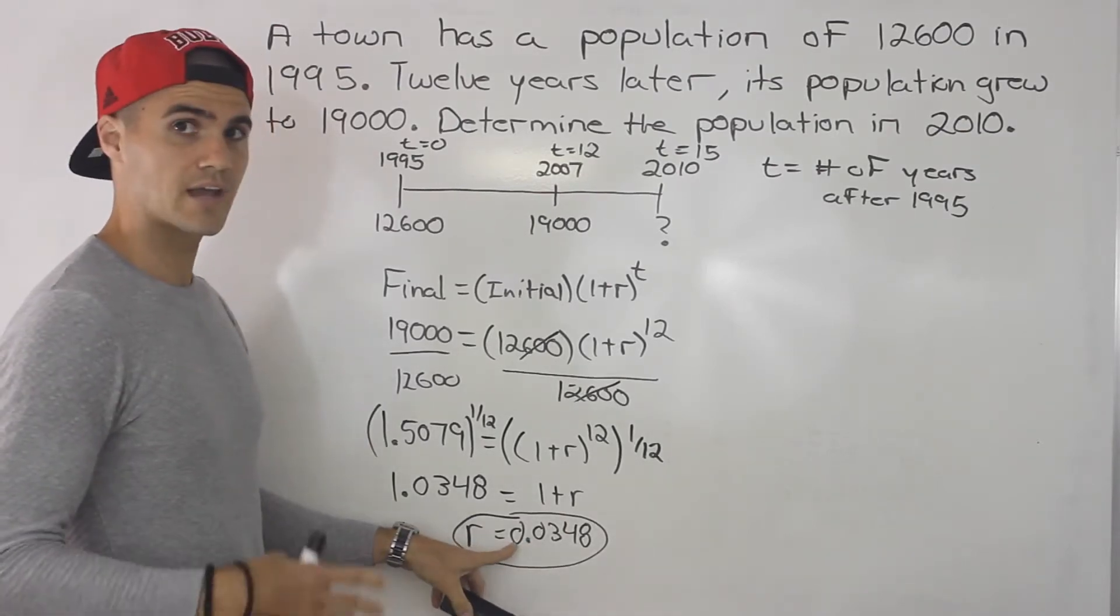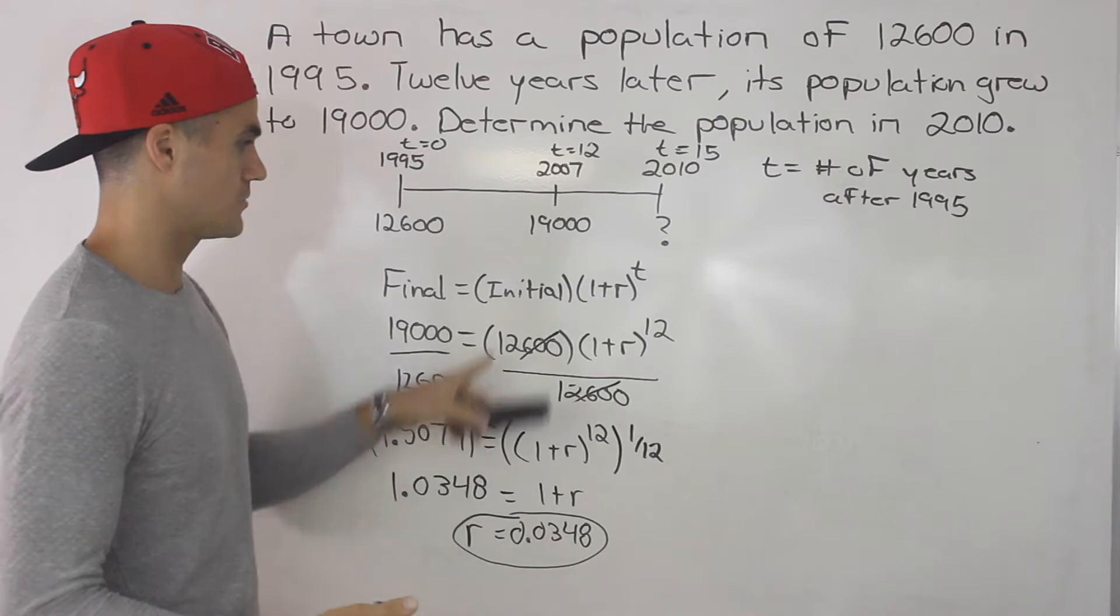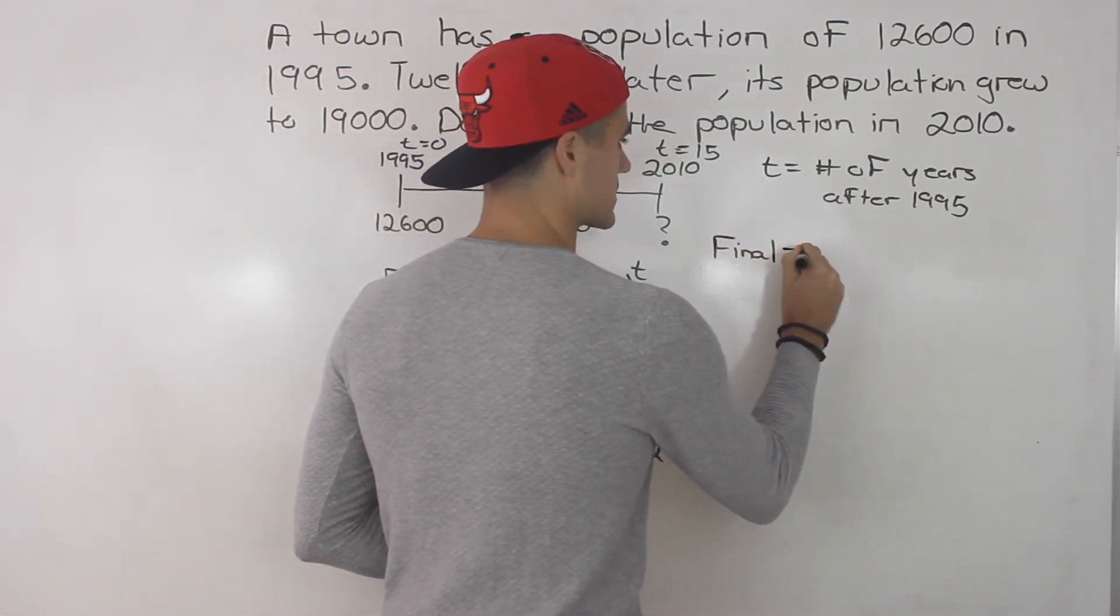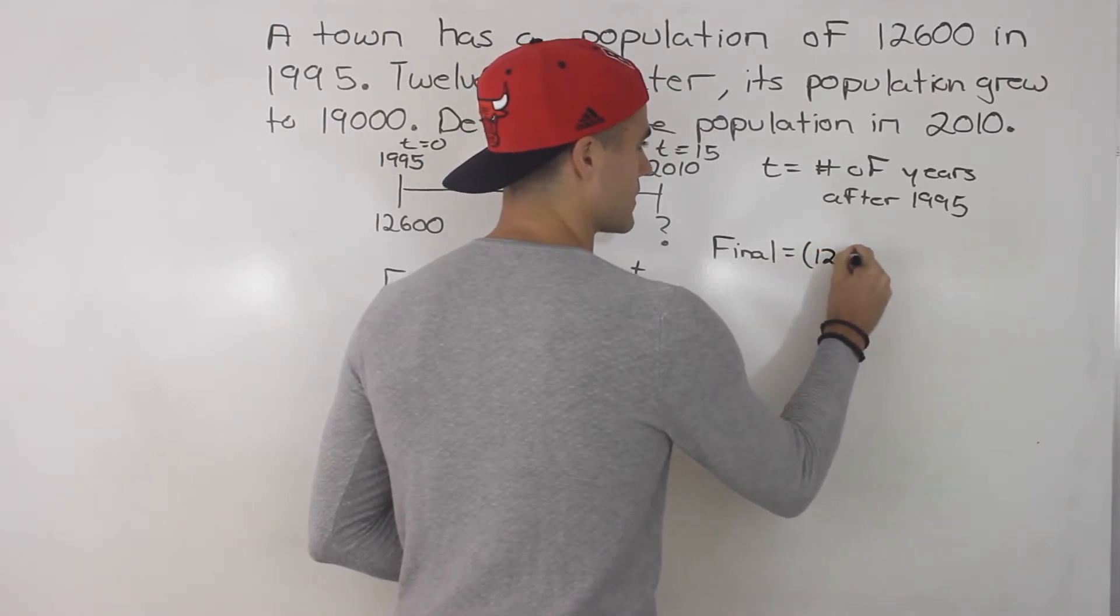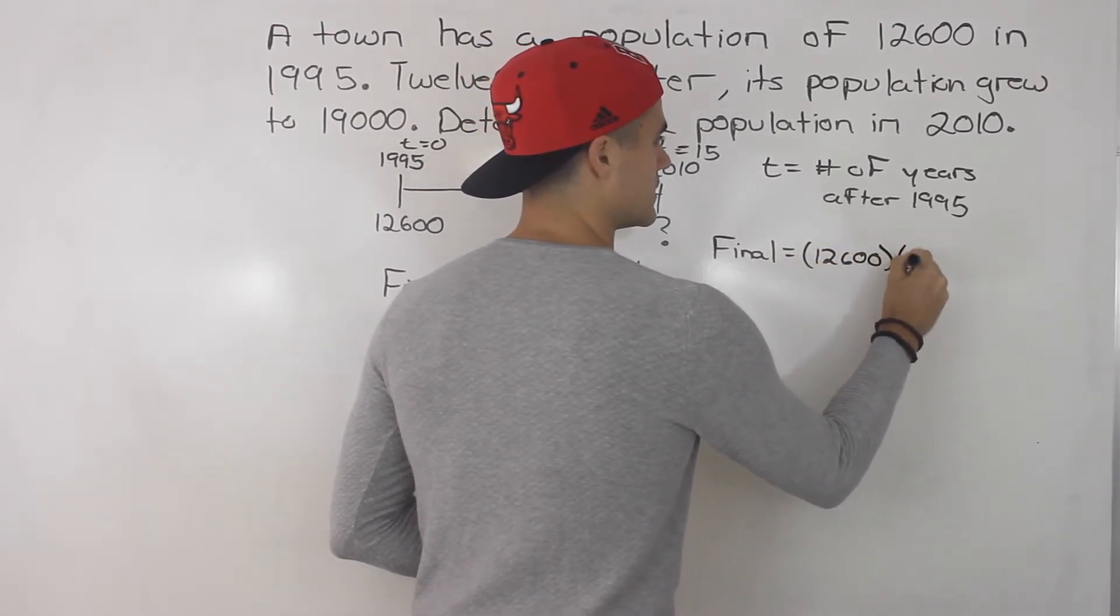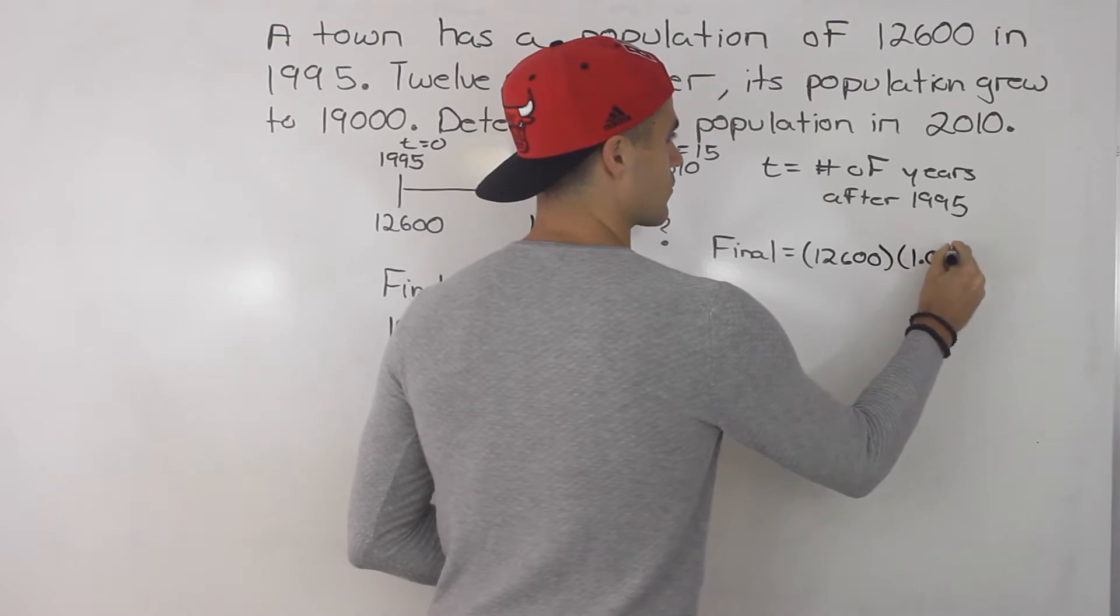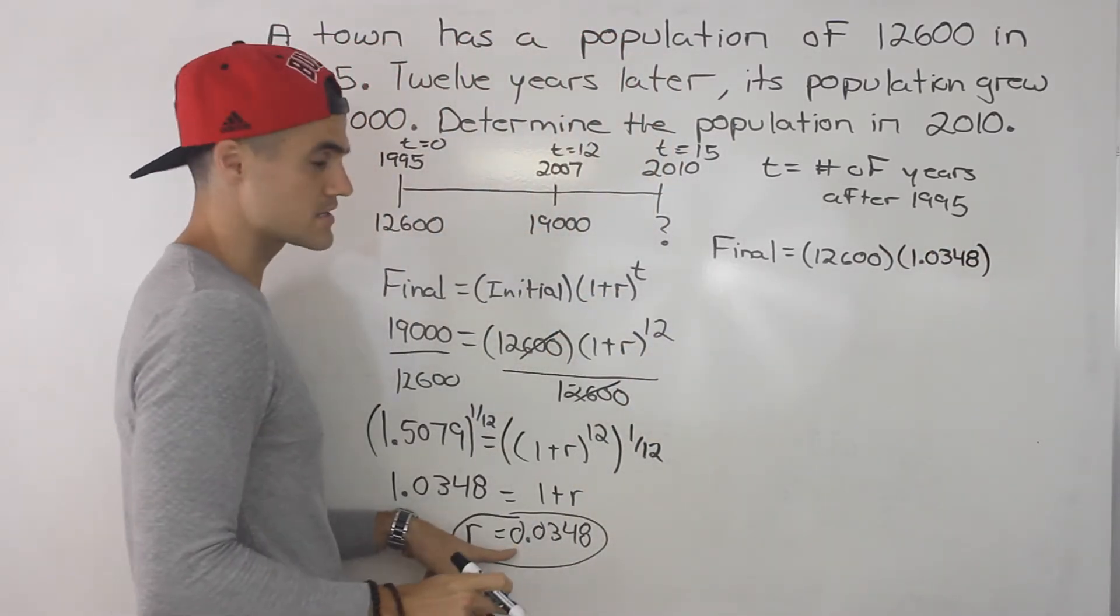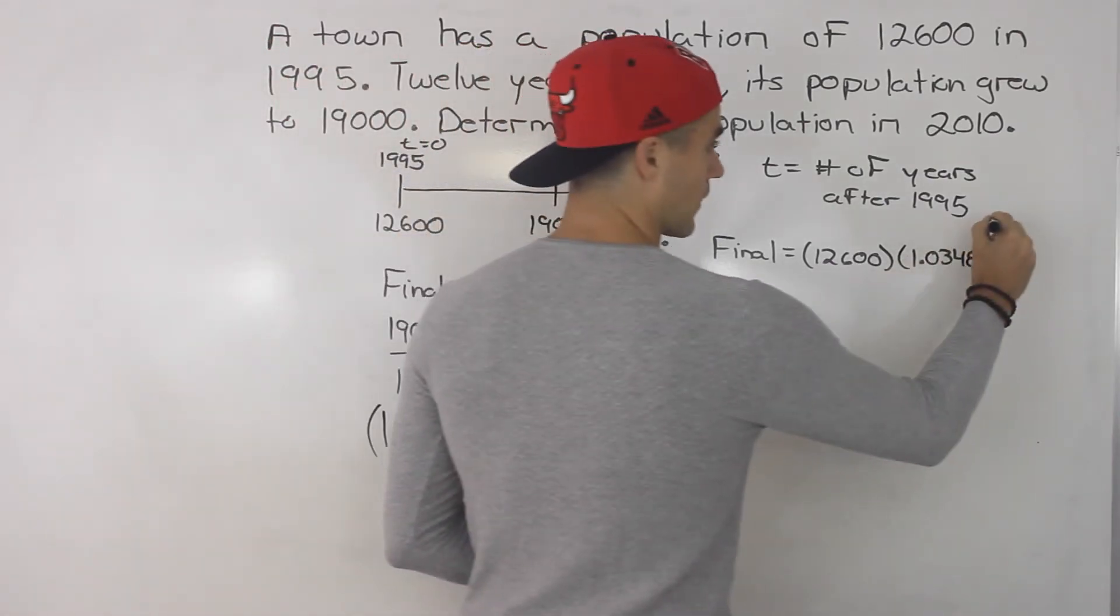So now that we have this, we can actually make a general equation, we could plug it in here. So we know the final population in any year is going to be the initial population 12,600 times 1.0348, 1 plus r, the r is this here, to the power of t.